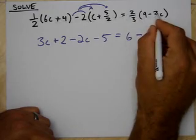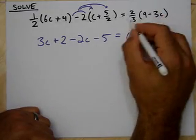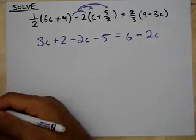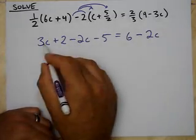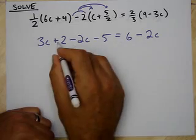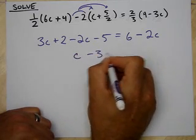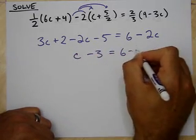Minus, 2 times 3 is 6 over 3 is 2. I can see the 3's cancel out in this 2 left over. Alright? So, let's combine like terms over here. 3c minus 2c is c. Positive 2, negative 5, negative 3.